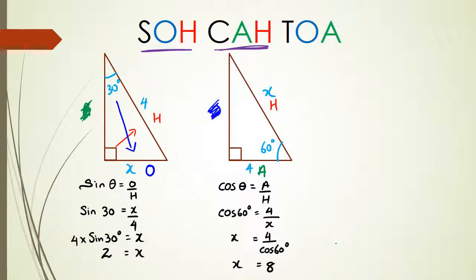What I want you guys to notice is in the sine rule example, x was in the numerator, so you multiply 4 times sine 30. But in this case x is in the denominator, so when we rearrange it looks different. This is where a lot of people make mistakes with the rearranging, so please check that you know what you're looking for and how you're actually rearranging it.